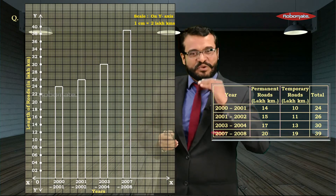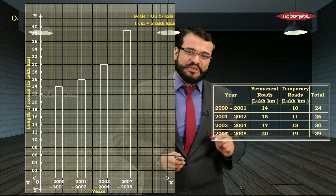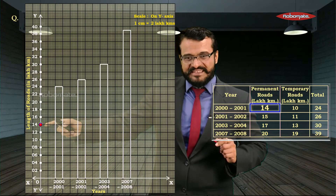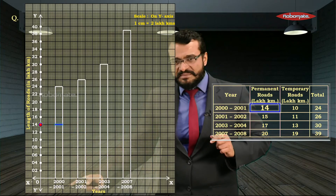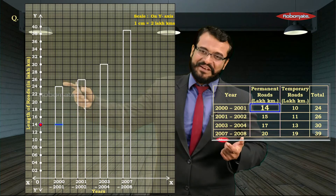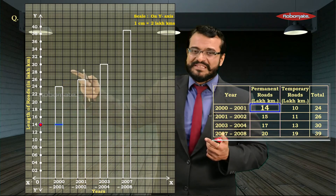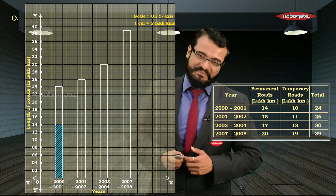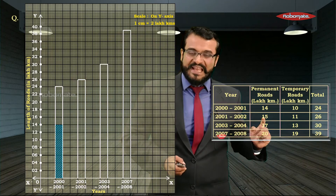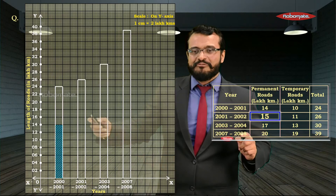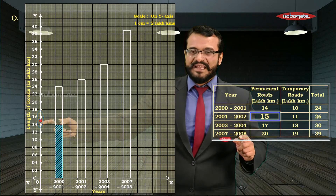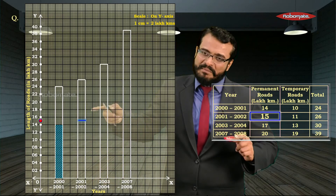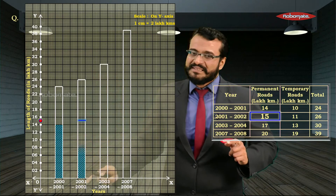For year 2000–2001, the length of permanent roads is 14, so divide the bar at 14. Shade the lower portion to indicate permanent roads; the blank upper portion becomes temporary roads. For 2001–2002, permanent roads = 15, which lies between 14 and 16 on the y-axis. Mark at 15, shade the lower portion for permanent roads, and leave the rest blank for temporary roads.